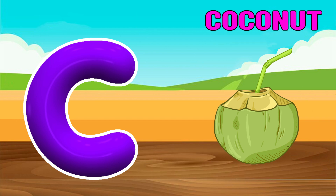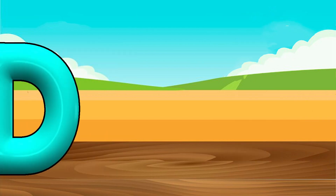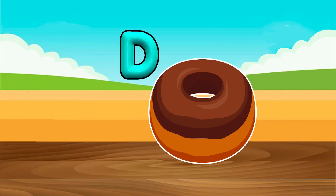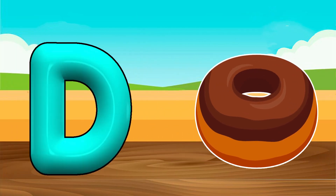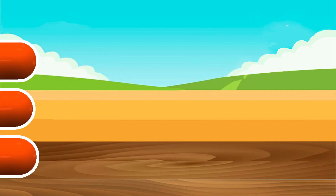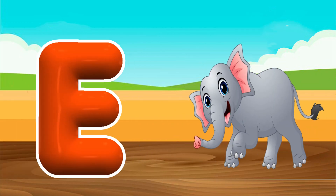Ca, Ca. Coconut. D is for Donut. Da, Da. Donut. E is for Elephant.